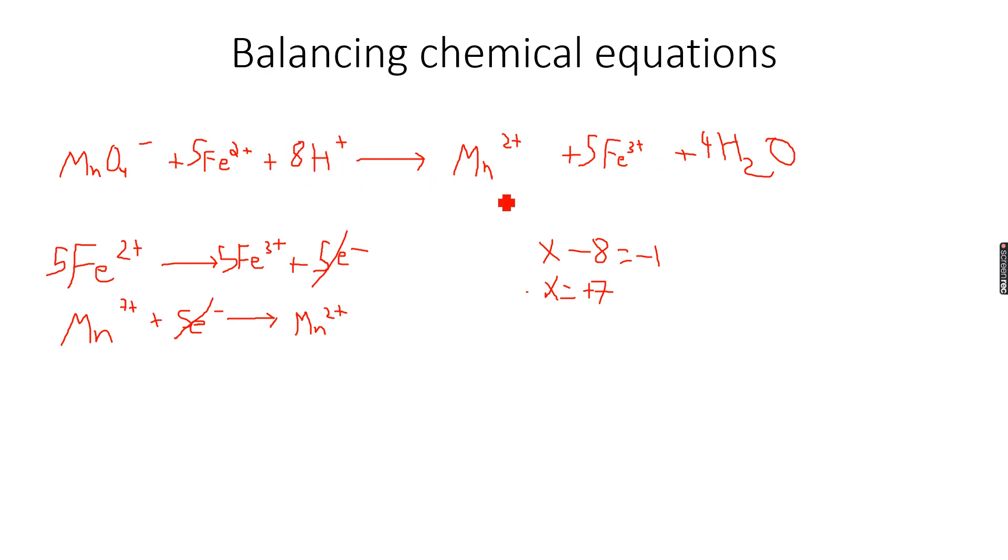So if you add all the charges in this equation now, if you add all the charges, then what you get is, let's add the total charges. So minus 1 plus 10 is 9, 9 plus 8 is 17, plus 17, so the total charge on the left side is plus 17. The total charge on the right side plus 2 plus 5 into 3 which is 15, plus 2 plus 15 which is plus 17.